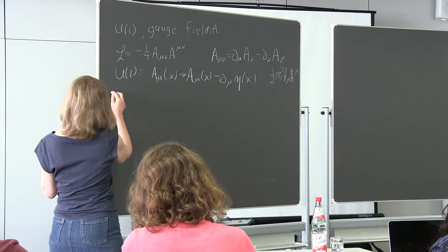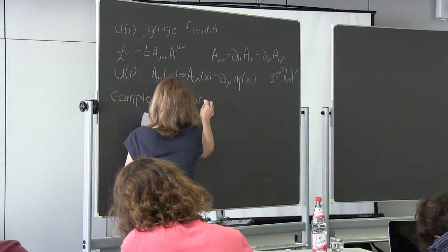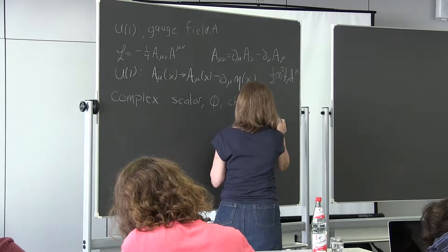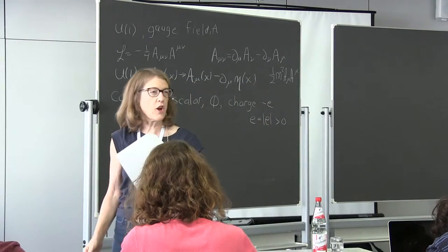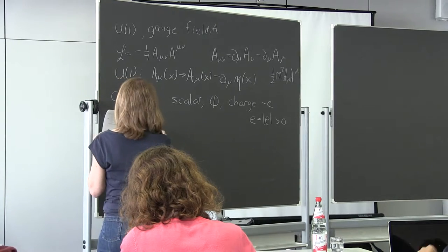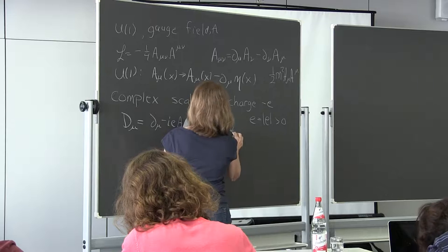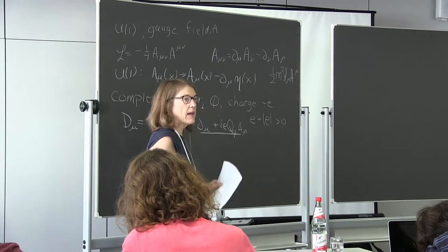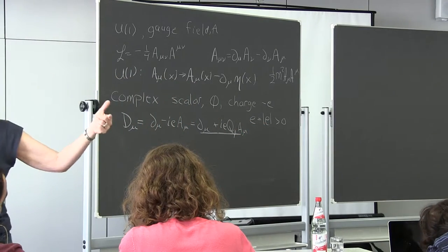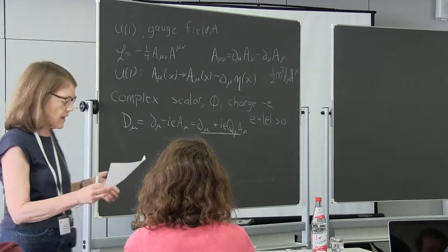The way to do this is to add a complex scalar field φ with charge minus e. That's my convention where charges are positive. The covariant derivative is D_μ = ∂_μ minus i e A_μ = ∂_μ plus i e Q_φ A_μ. This defines my conventions for signs — these are the Higgs-Hunter's Guide conventions — and that sign is going to come into interference terms when you calculate.